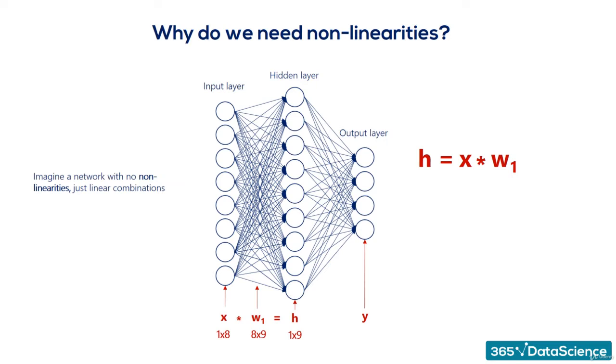Y is equal to H times W2. We have W2 as these weights are different. We already know that H matrix is equal to x times W1, right? Let's replace H in this equation.